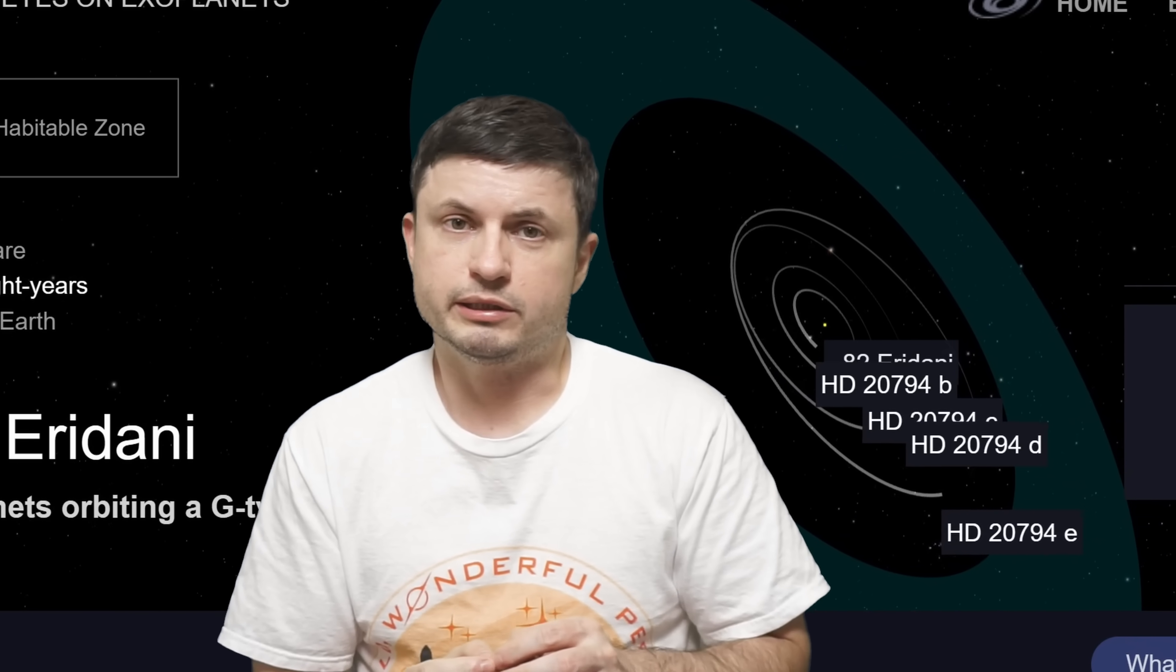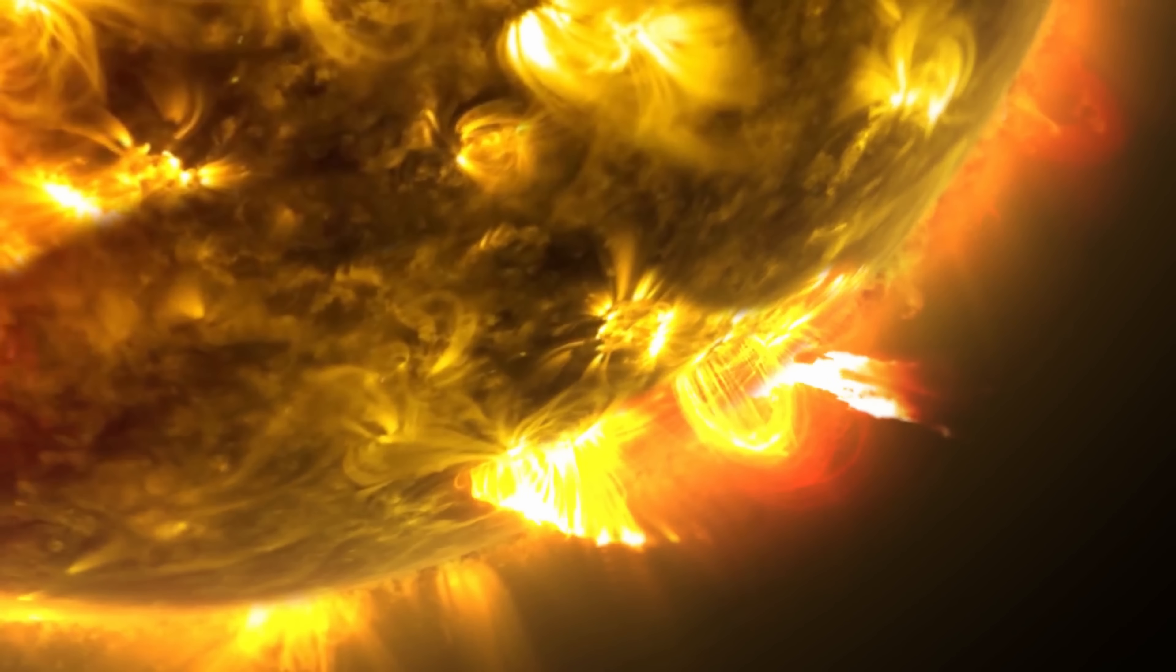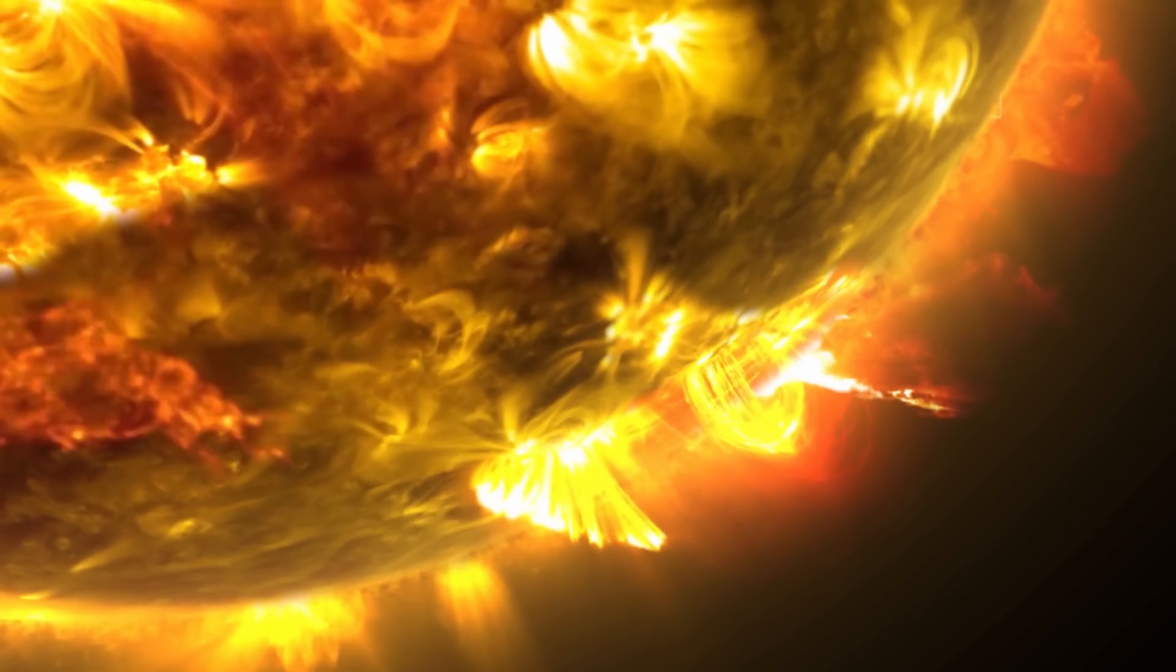And is also a relatively mild G-type star, a little bit less bright and a little bit less massive than the Sun, with 80% of solar mass and 90% of solar radius.